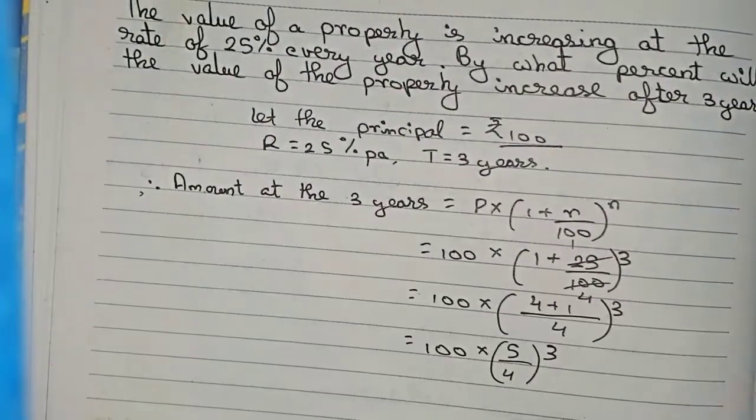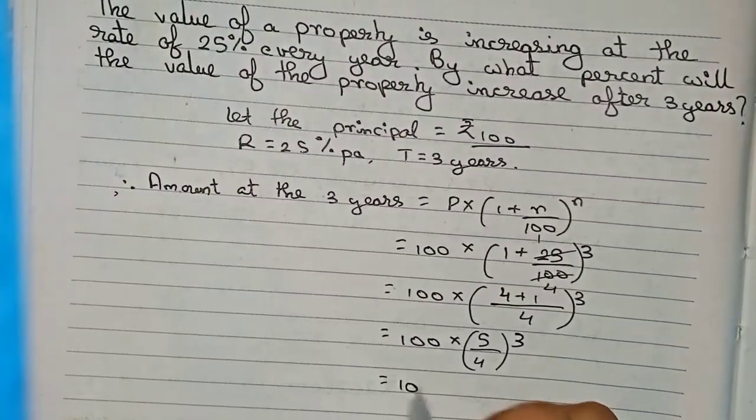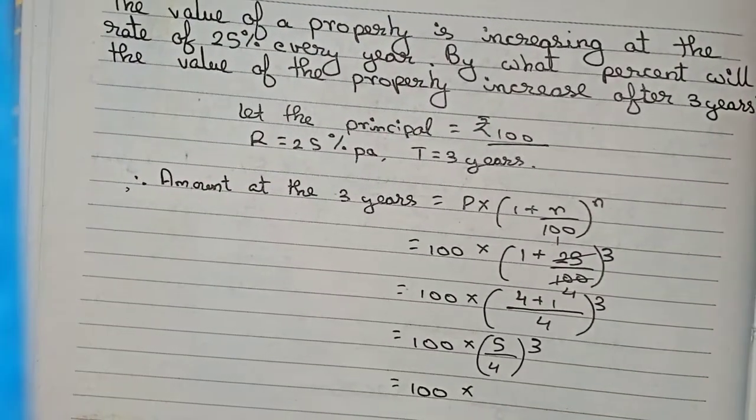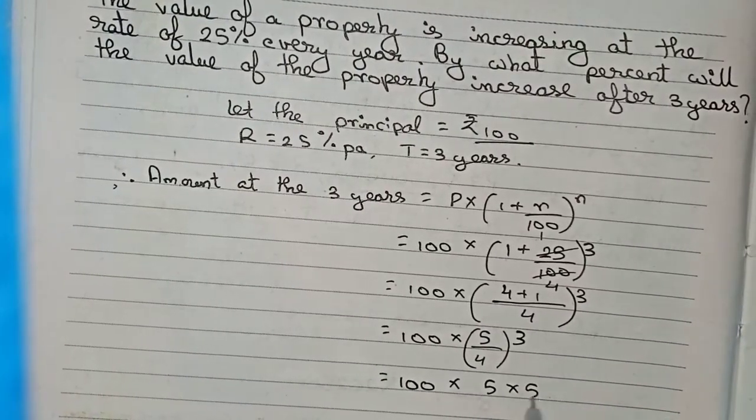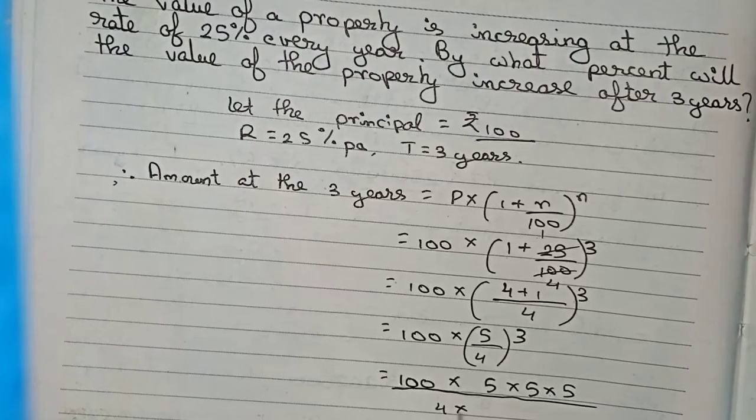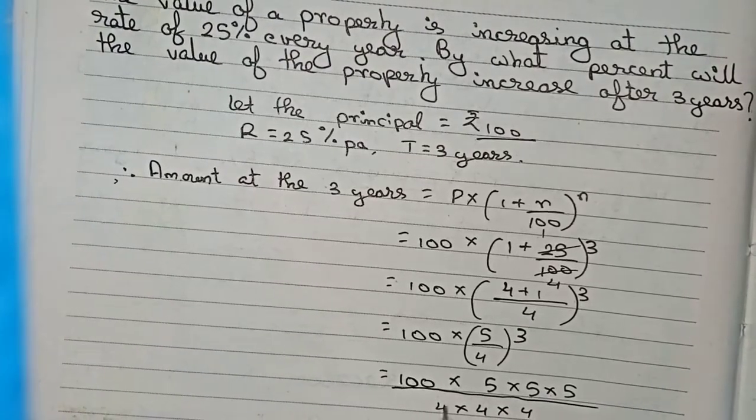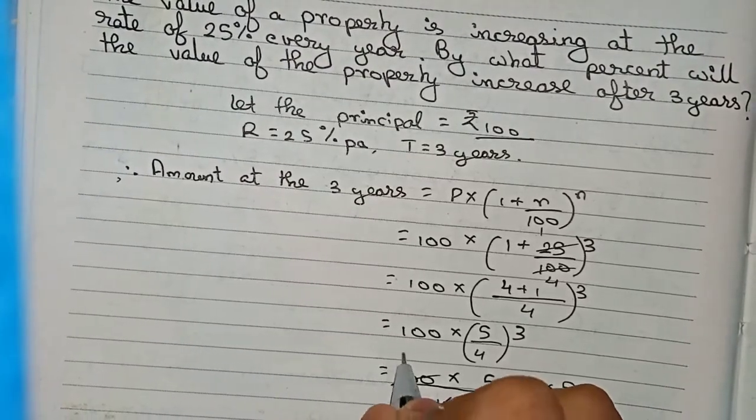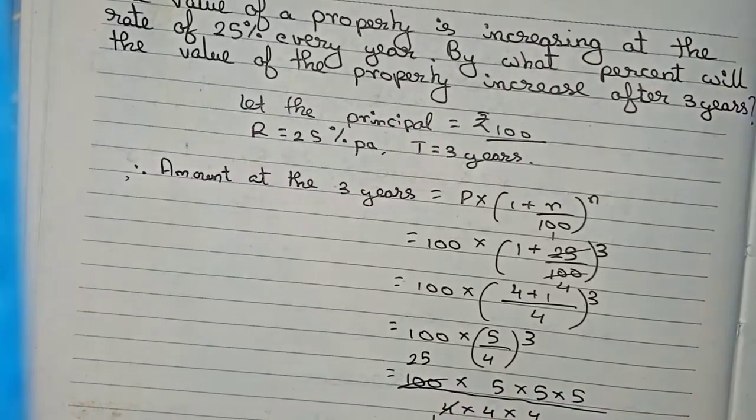This becomes 100 × (5×5×5)/(4×4×4). First, 100/4 = 25, so we get 25 × (5×5×5)/(4×4), and nothing more can be simplified.